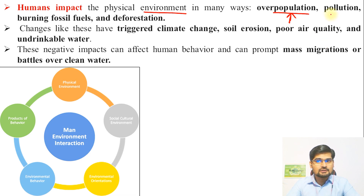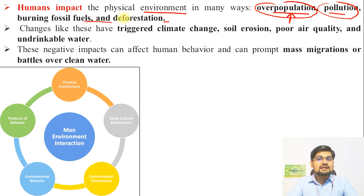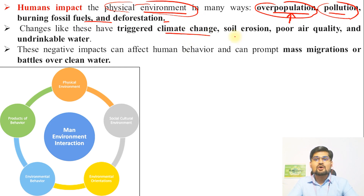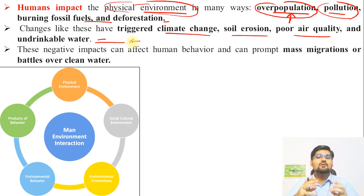Then we have pollution, which we are creating because of overpopulation in many ways — burning of fossil fuels, deforestation. These are specifically human activities that are having an impact on the physical environment. These changes have triggered climate change, soil erosion, poor air quality, and undrinkable water — so many things that you can yourself list. Every day in our newspapers and everyday experiences, we come across one or all of these problems.